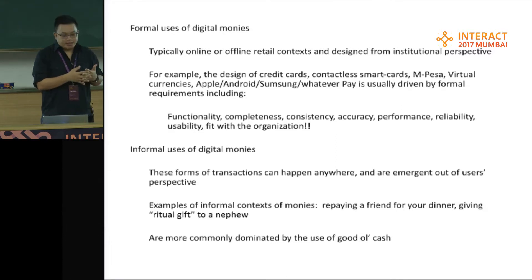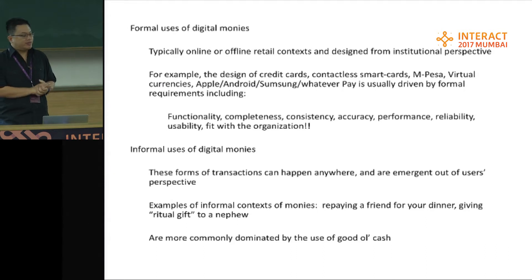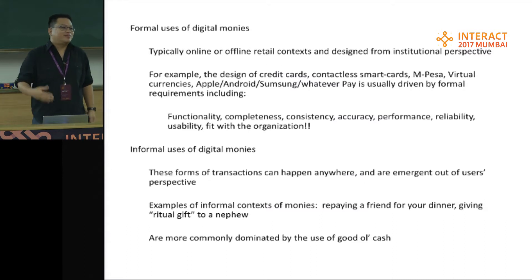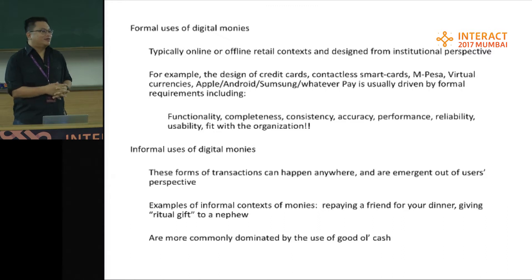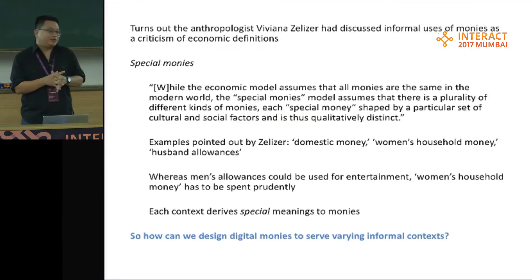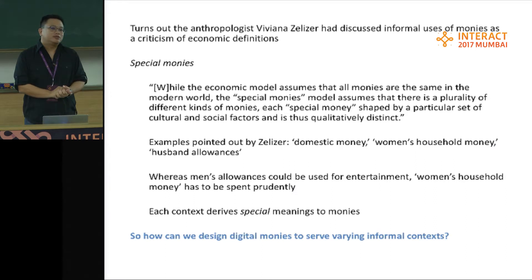But these digital monies also involve informal uses that we often overlook. These informal transactions can emerge out of users' perspectives. Examples of informal context include going for dinner with a group of friends where one of them paid and you want to pay back that person, or the giving of ritual gifts. In Chinese culture there are red packets, and in Malay culture there are green packets of money. In these informal uses of money, they are typically dominated by good old cash. So how can we design digital monies to fit into these kinds of informal situations?